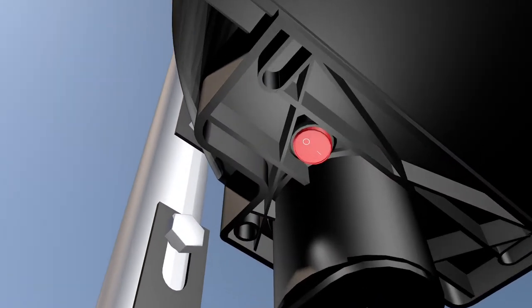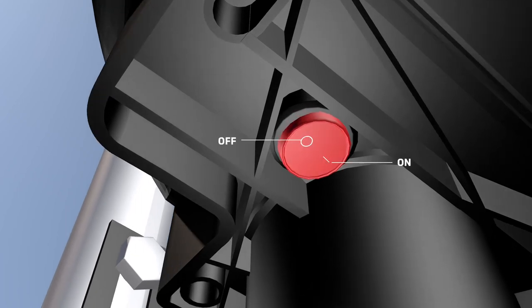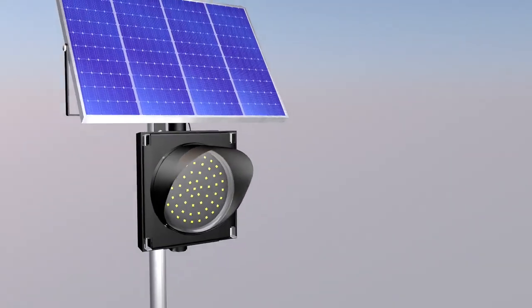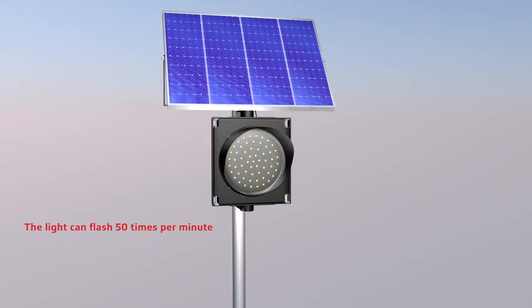Press the button at the bottom of the light to turn the light on and off. The light can flash 50 times per minute.